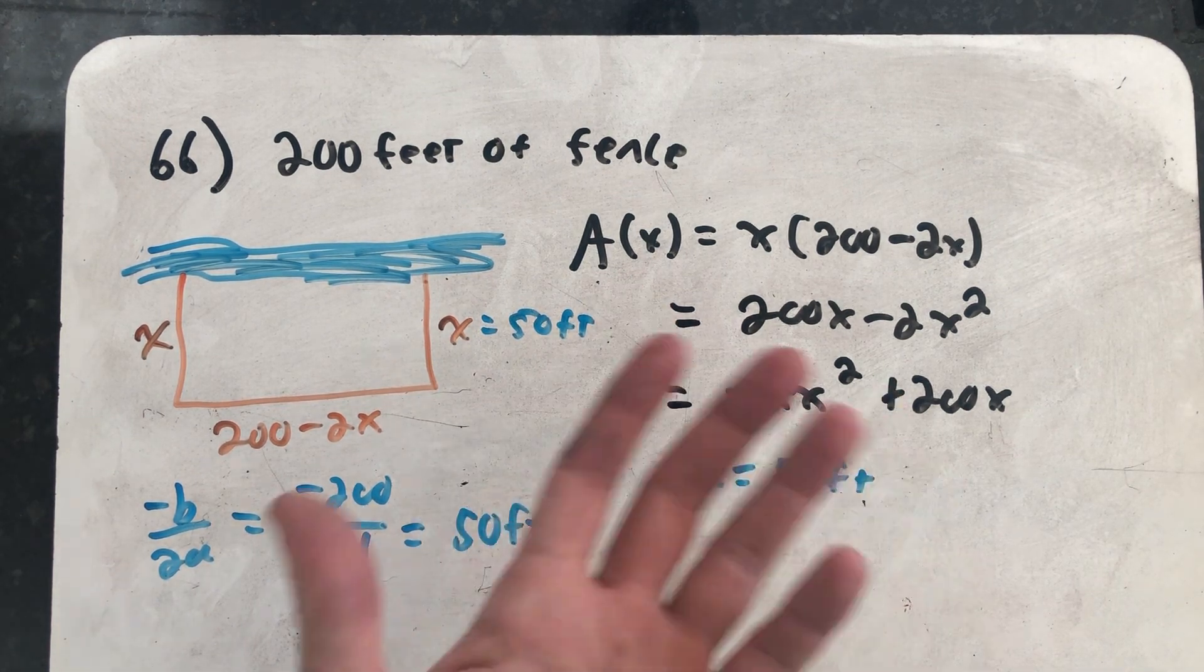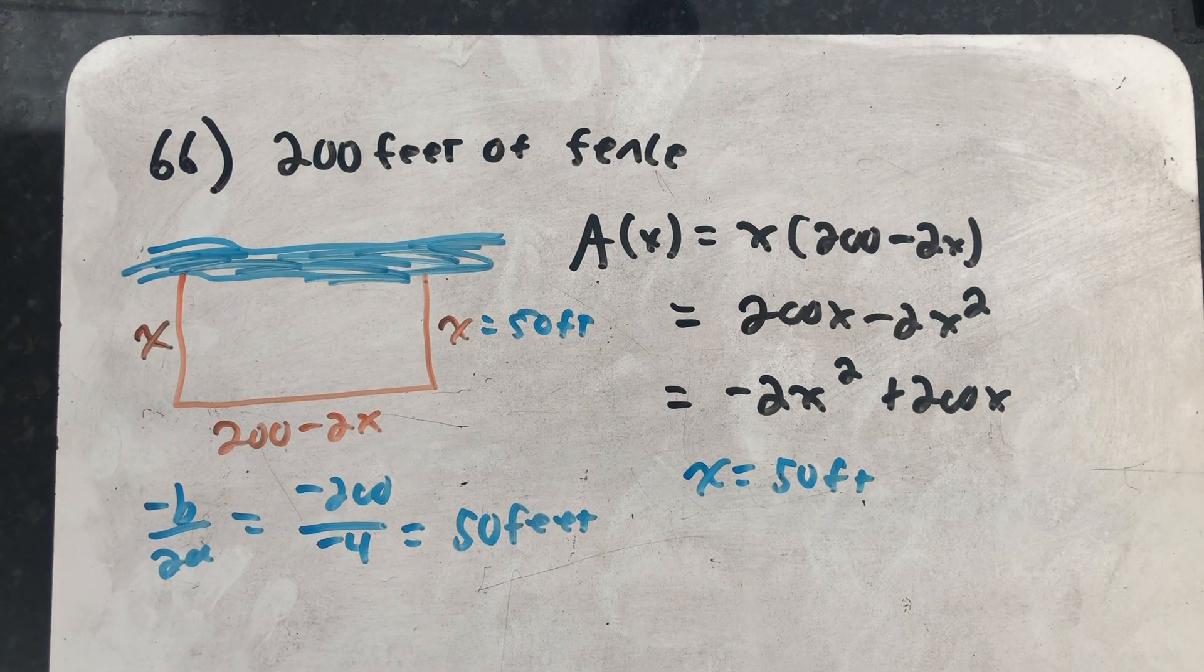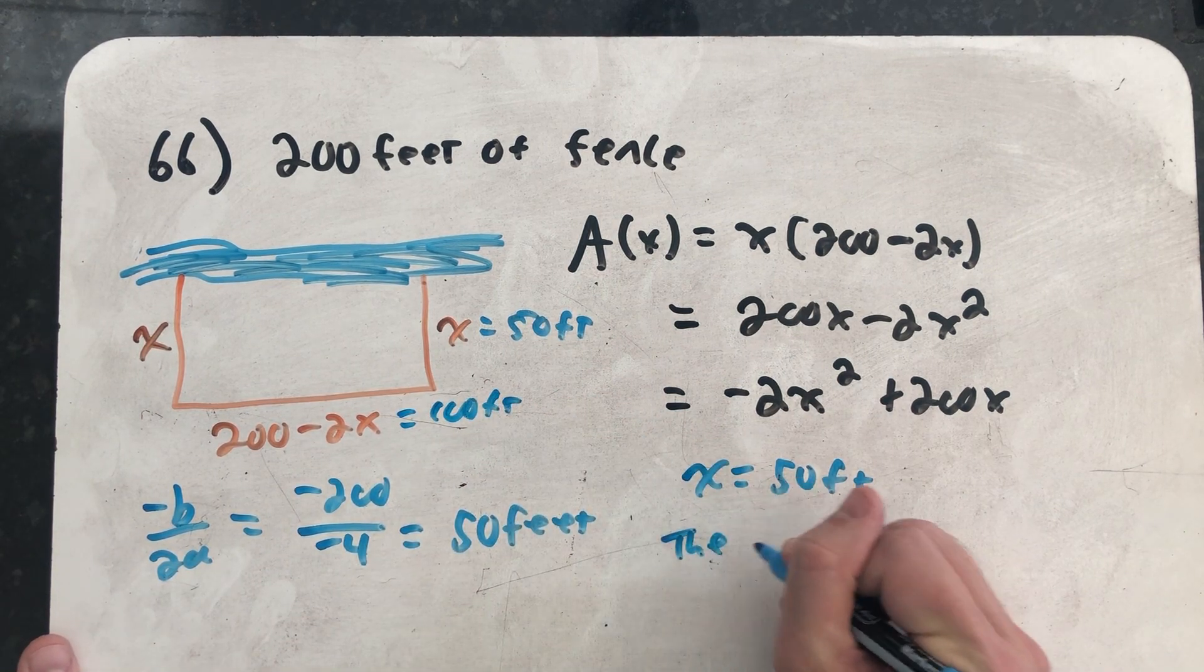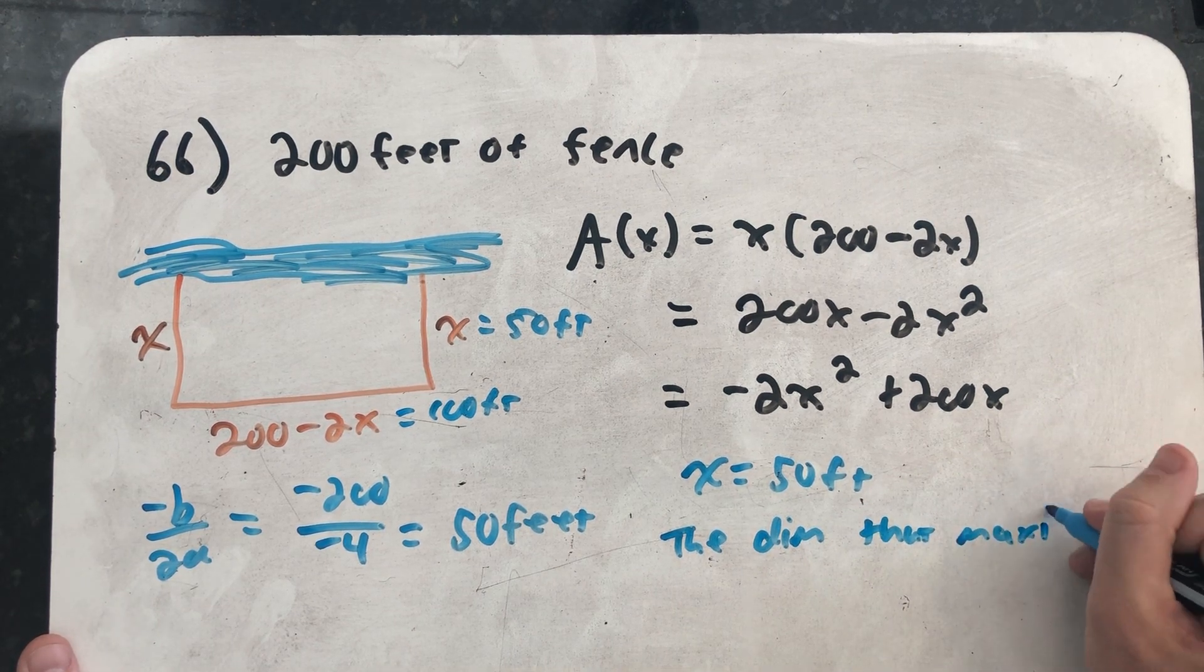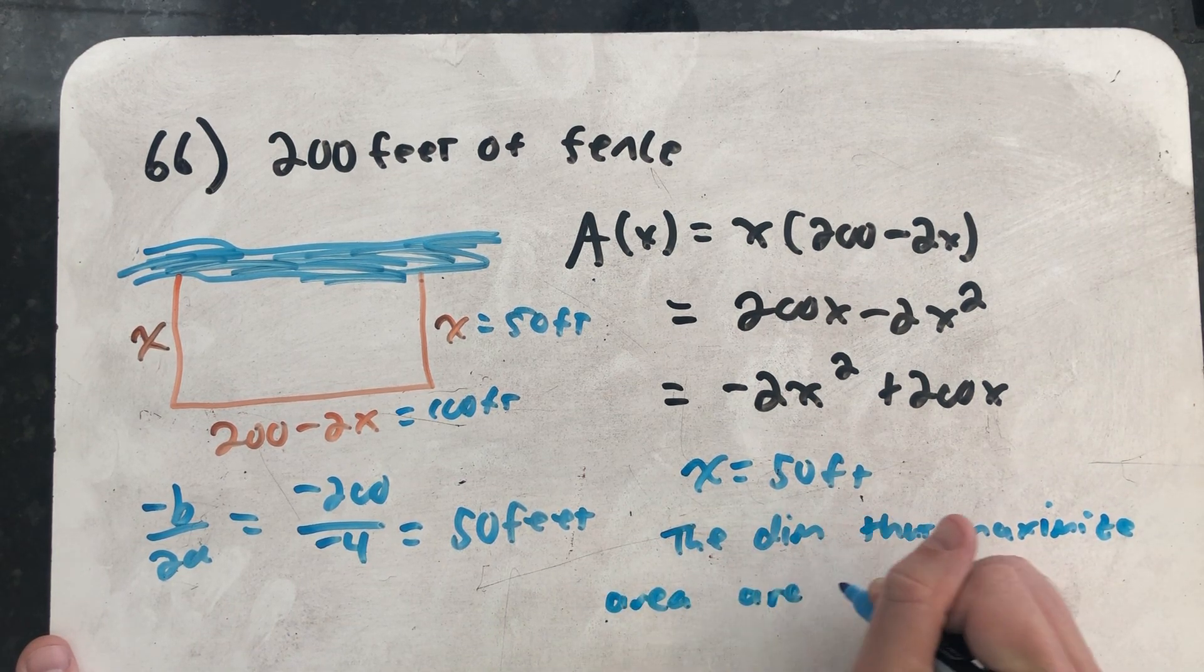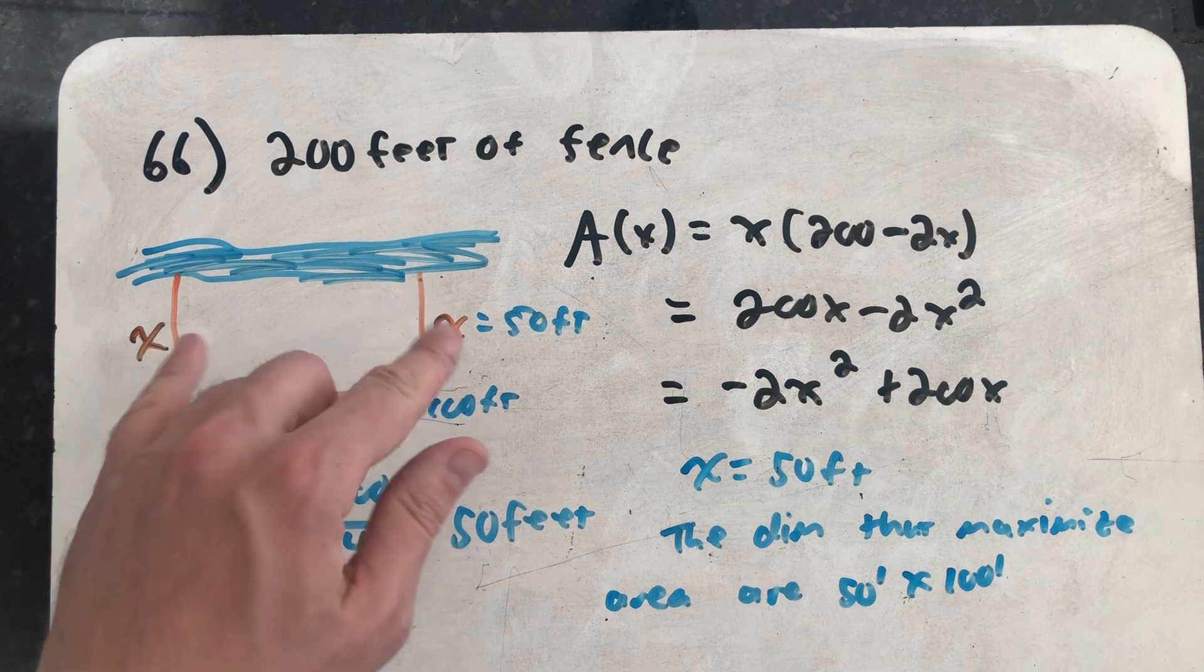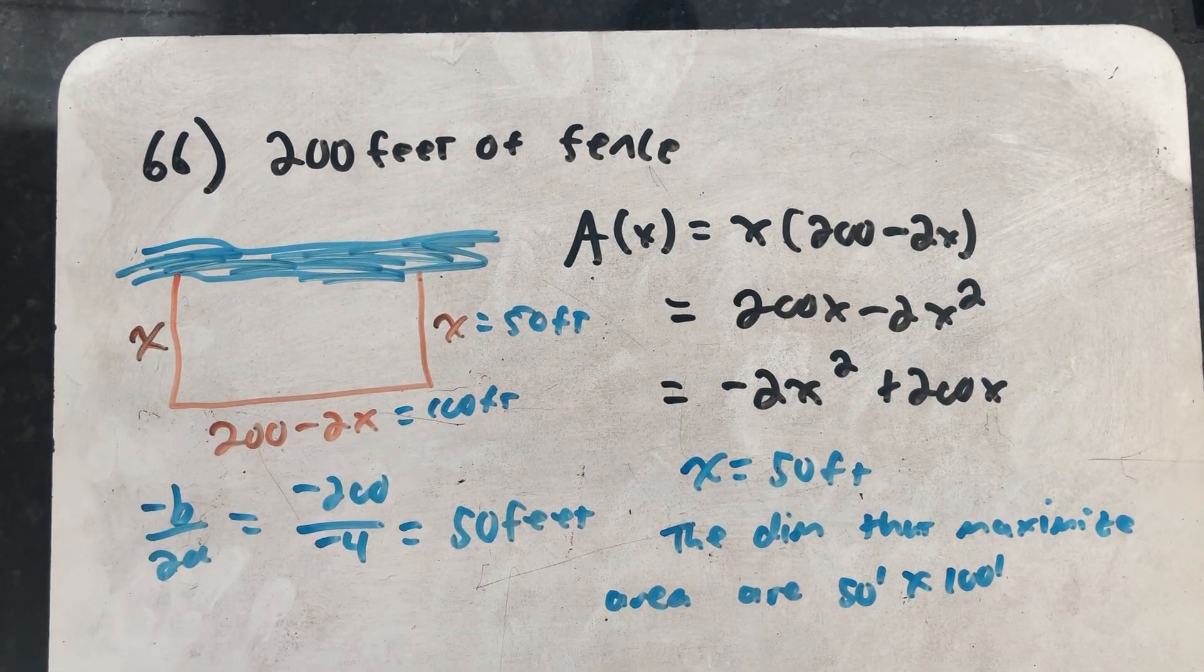If I plug x into the function, that will give me the maximum area, but what I really want to find now is the length of 200 minus 2x. Plugging in 50 would give me that this side length would be 100 feet. The dimensions that maximize area are 50 feet by 100 feet. And here I have them labeled where they go, so I know that x is the side of two side lengths, and 100, I only have one length that side.